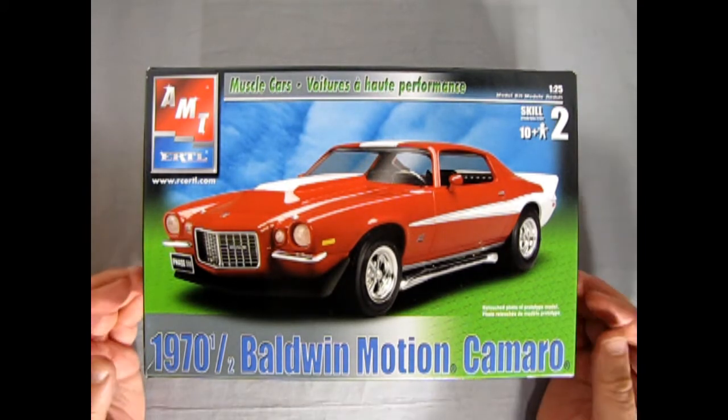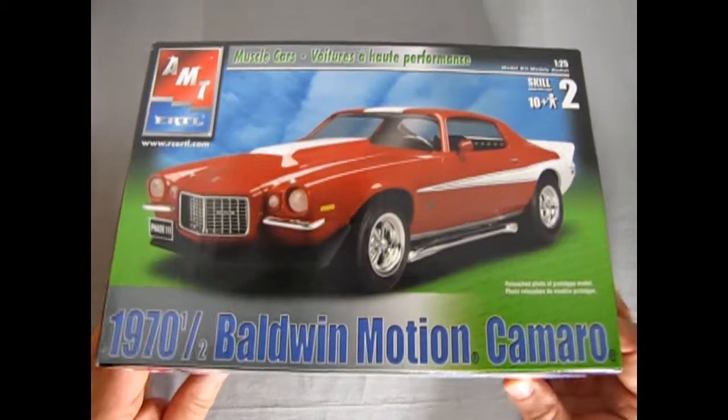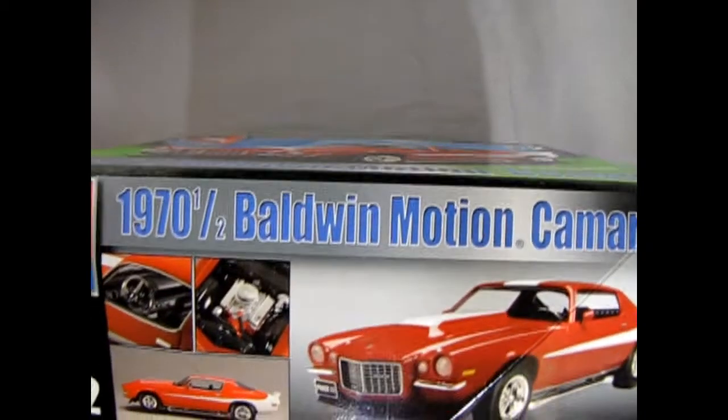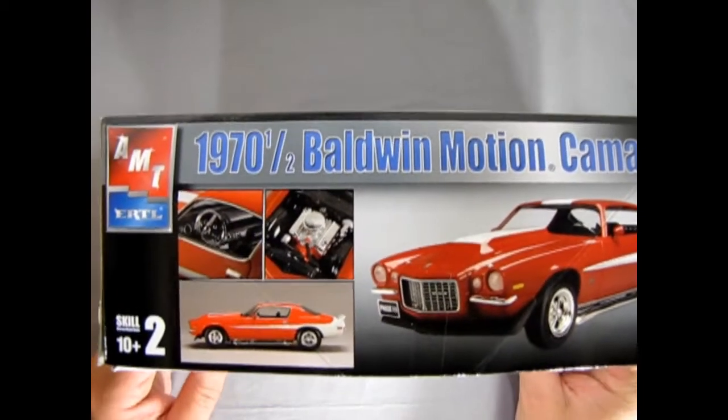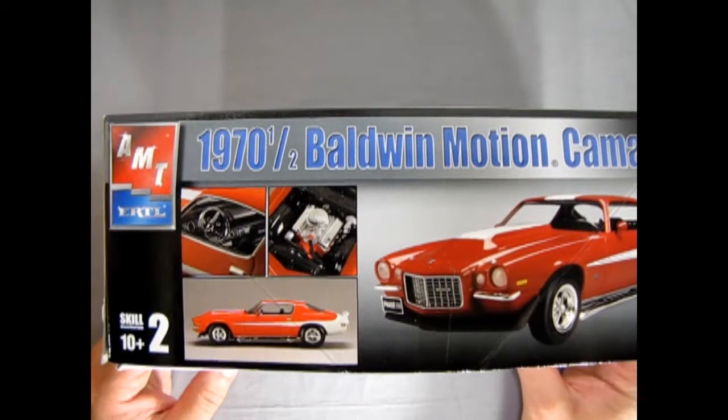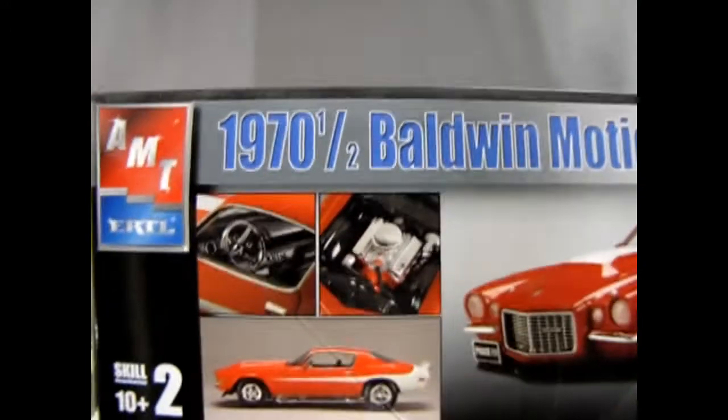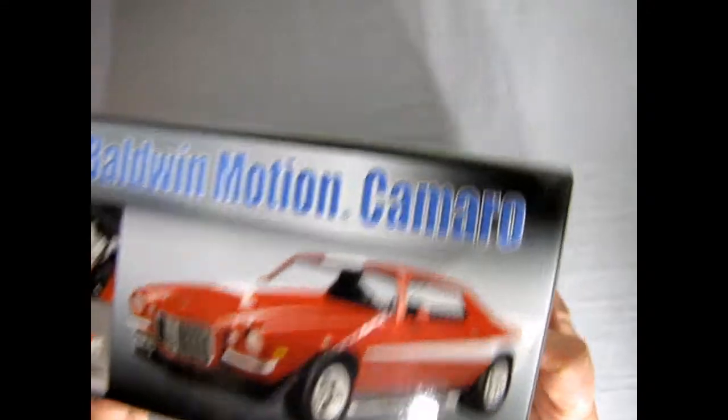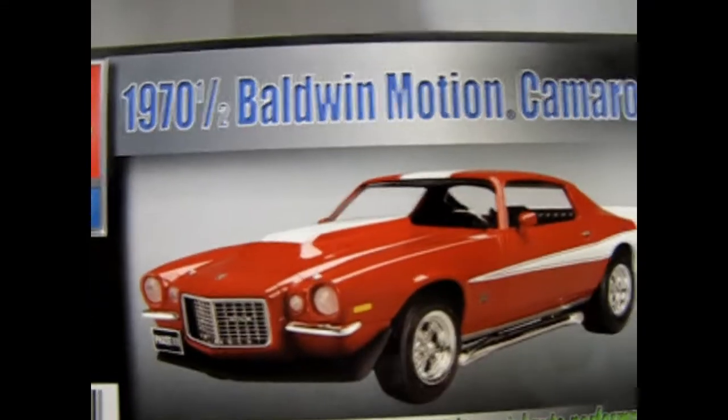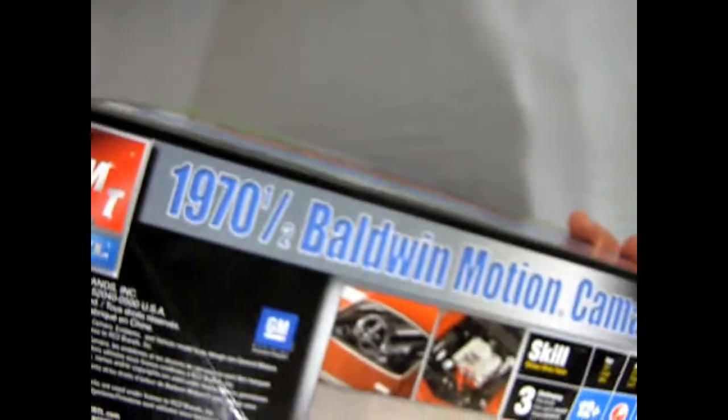So here we have our 70 1/2 Camaro. And this one is from AMT, I think under the Round 2 banner. And as you can see off the side here, we get some nice little build-up on it, as well as the front three-quarter view. And our side here, or sorry, our end.